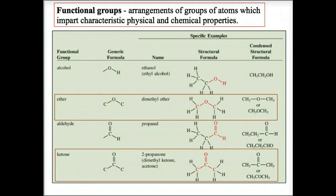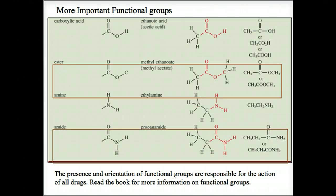A functional group is an atom or group of atoms within a molecule that shows a characteristic set of predictive physical and chemical properties. This table summarizes the major functional groups of carbon molecules. Functional groups are important because they undergo the same types of chemical reactions no matter in which molecules they are found. To a large measure, they determine the chemical and physical properties of the molecule. They are the units by which we divide organic compounds into families, and they provide the basis on which we derive names for organic compounds.